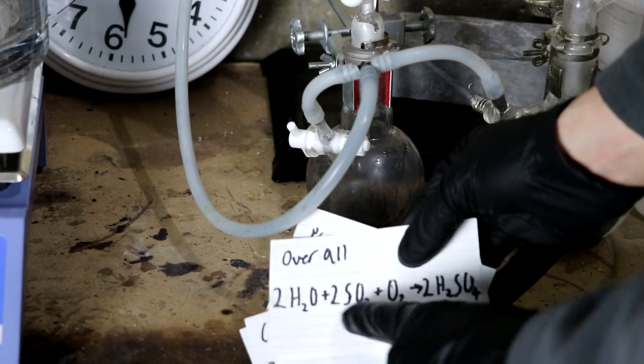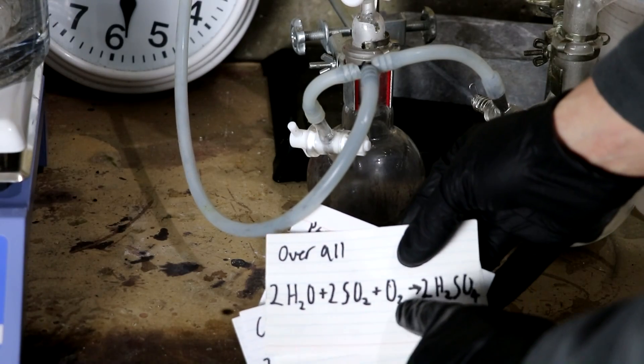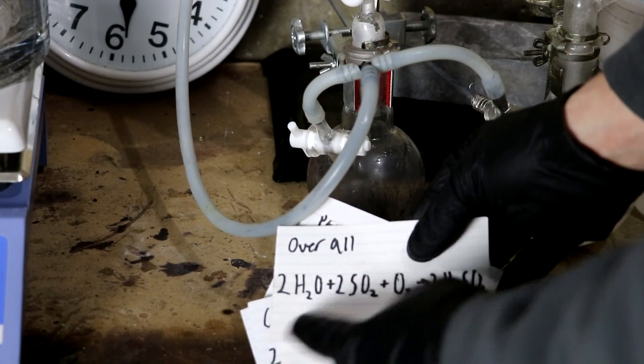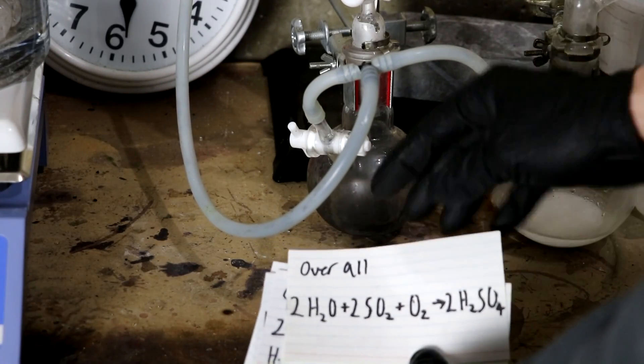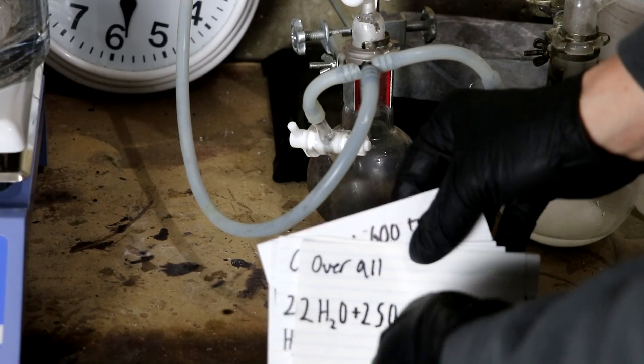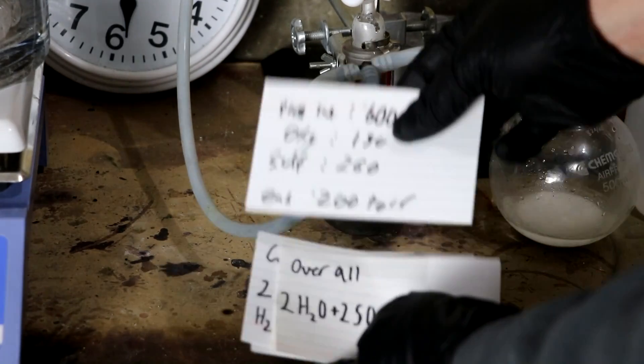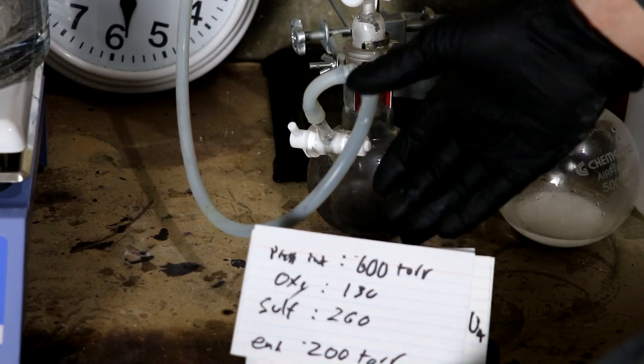So in our overall reaction we have two sulfur dioxide for one oxygen. Now these are by moles and a mole of gas is the same volume as another mole of gas so we're going to have two to one by volume. And volume does correspond to pressure.